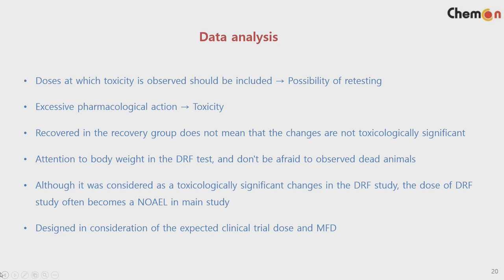We do the DRF testing to set the dose range. For example, ALP that is three times higher than normal (e.g., 300 vs. 100) suggests significant liver effects, so that dose should be included in the repeat dose testing. However, the result from the DRF study is not always 100% repeated in the repeat dose testing — sometimes the histopathological examination does not show much difference. The clinical trial dose and the MFD need to be considered in designing the study.